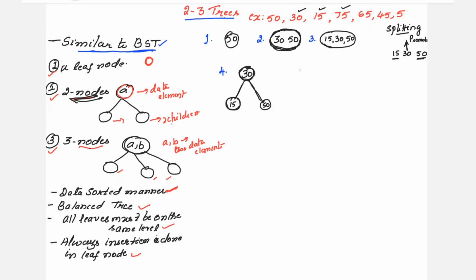Next is element 75. Since 75 is greater than 30, it goes to the right side. We insert only at the leaf level and must maintain sorted order, so the right child node becomes 50 and 75. You can observe that the data is always kept in sorted form: 15, 30, 50, 75.